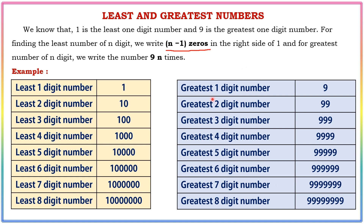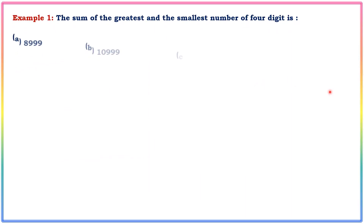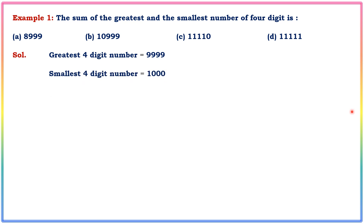Now, let's look at the smallest and greatest four-digit numbers. The greatest four-digit number is 9999. The smallest four-digit number is 1000.